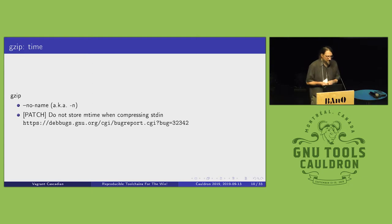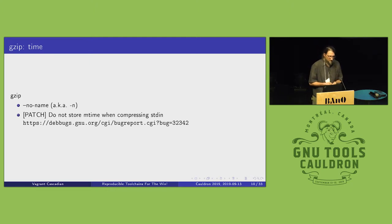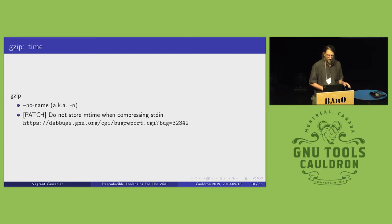Gzip also has a feature — the no-name argument, aka dash-n — that removes the filename, and it also conveniently removes the timestamp. So if you're using Gzip in any of your build artifacts, that helps. There was also a patch, which I think got accepted, to not store the timestamp when compressing on standard input. So Gzip has joined the no-time party.